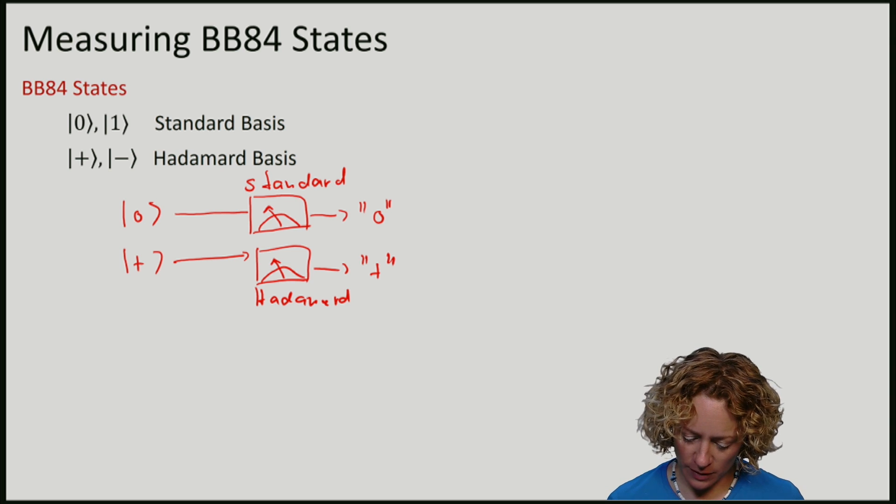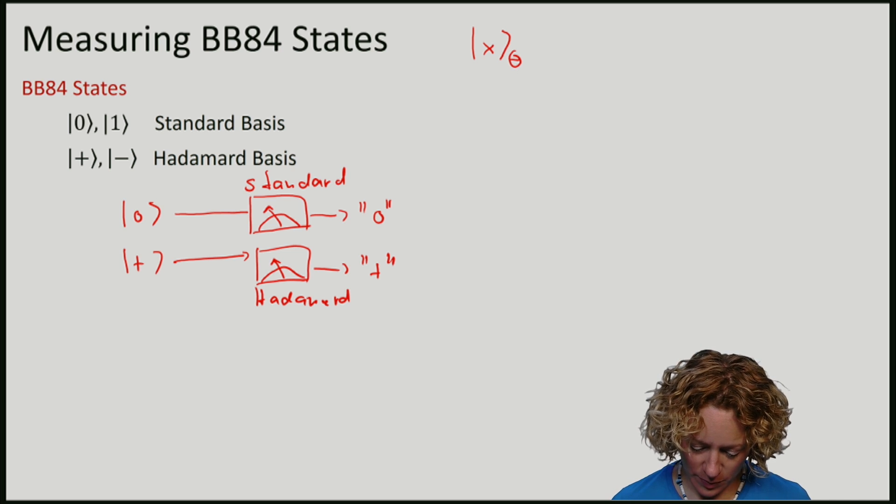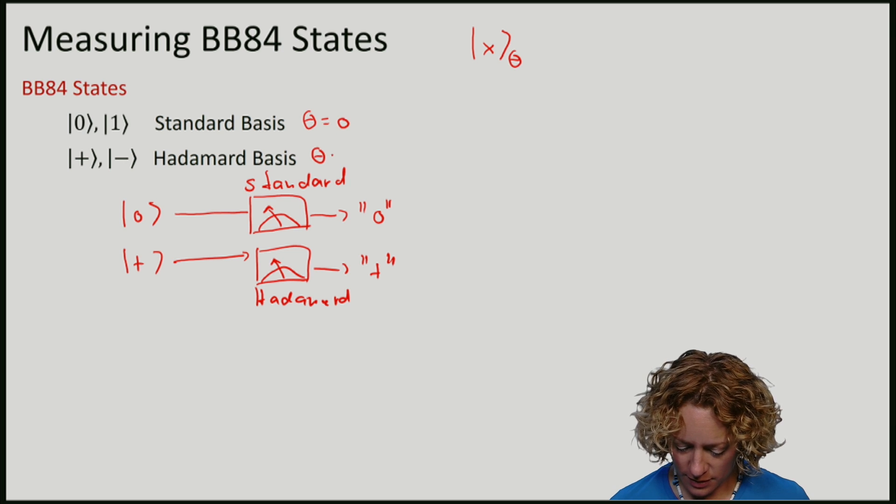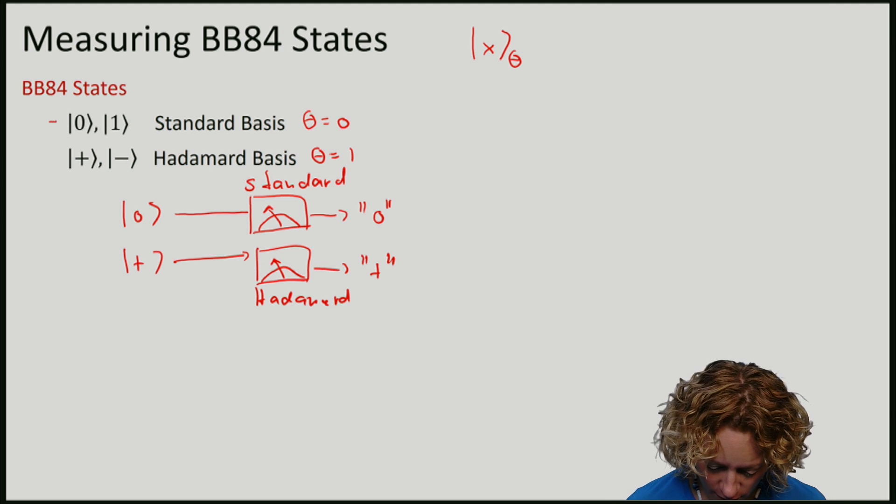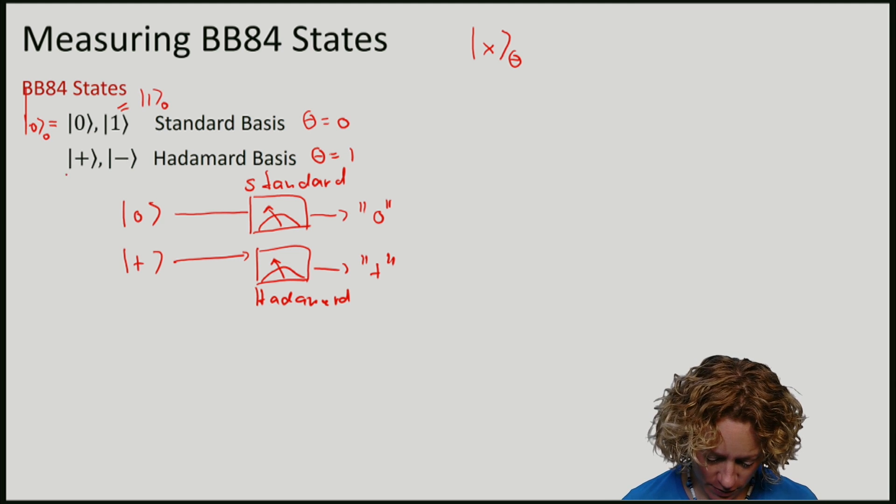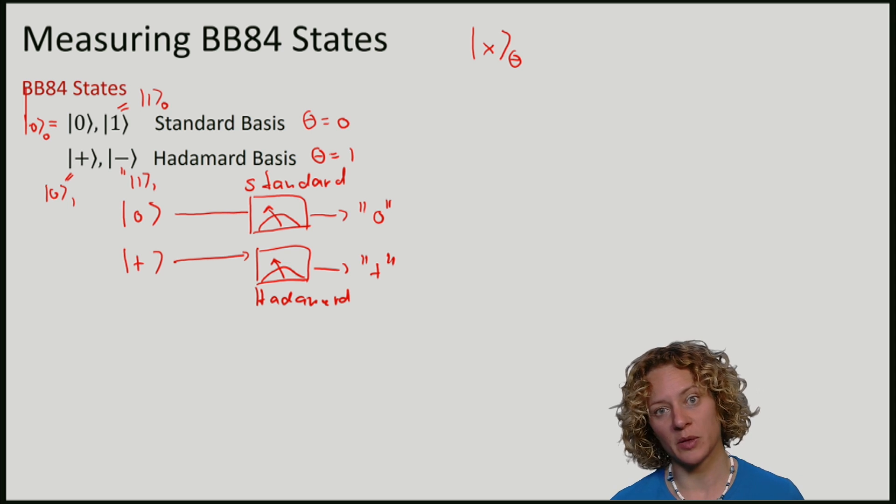So in general, if I take a state X and encode it in basis theta - where theta equals zero denotes the standard basis and theta equals one denotes the Hadamard basis - these basis elements are |0,0⟩ and |1,0⟩ for the standard basis, and |0,1⟩ and |1,1⟩ for the Hadamard basis.